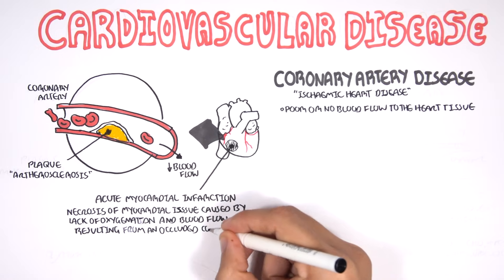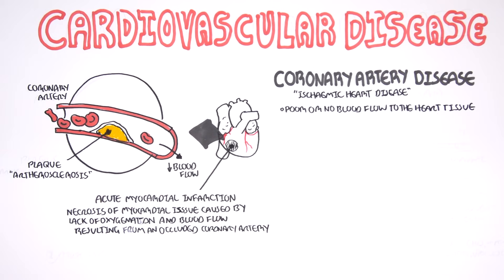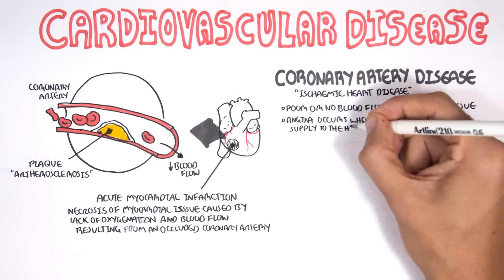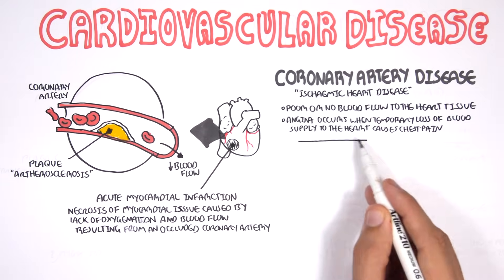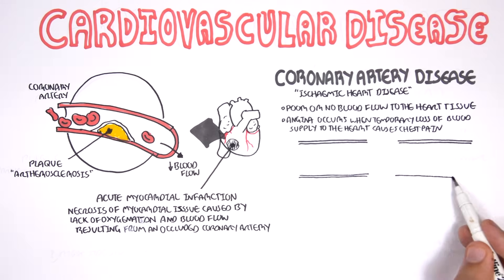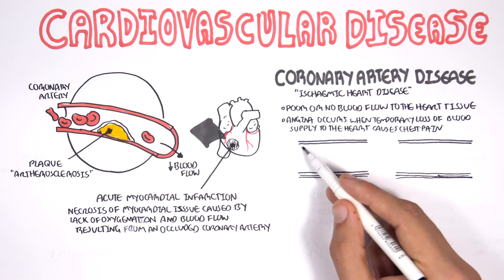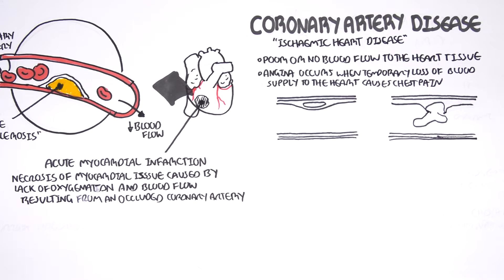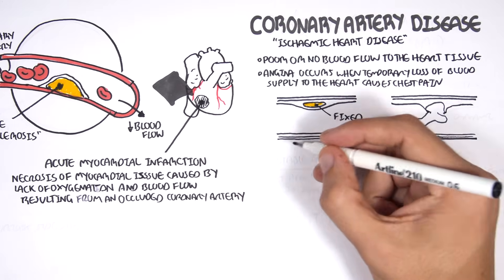Acute myocardial infarction is a result of an occluded coronary artery. Coronary artery disease is associated with angina, which occurs when there is a temporary loss of blood supply to the heart, causing chest pain. There are two types of angina: stable angina and unstable angina. Stable angina is where we have a stable plaque and chest pain comes about upon exertion, such as exercising.